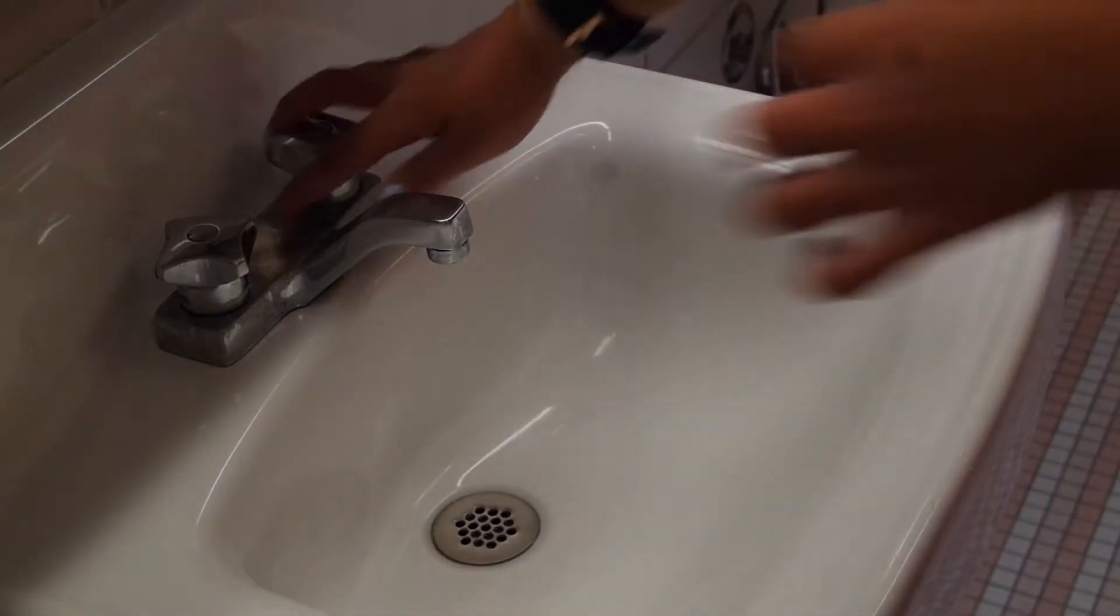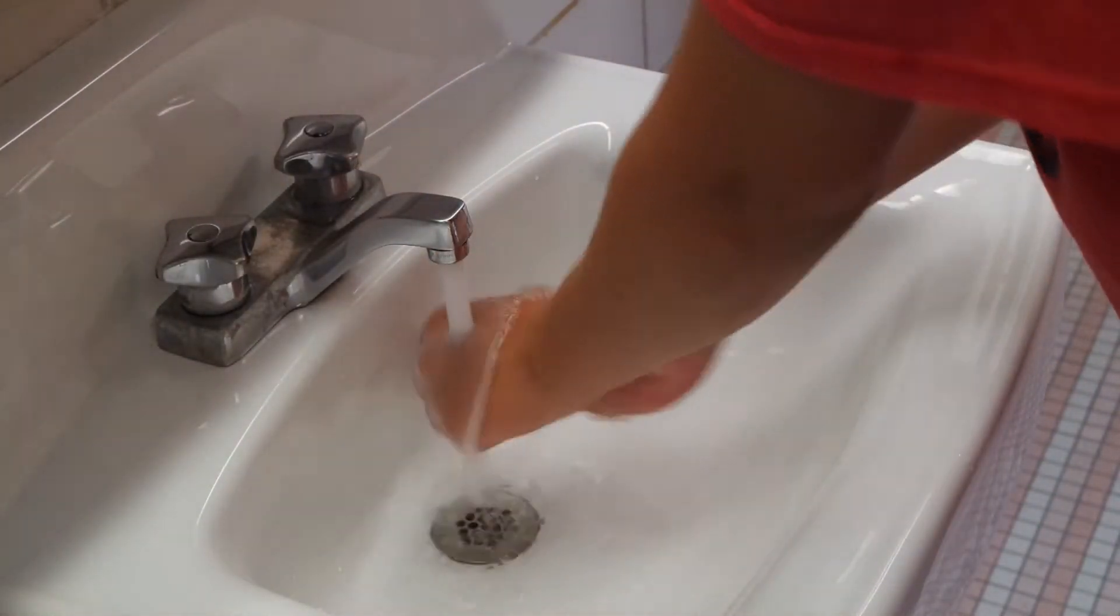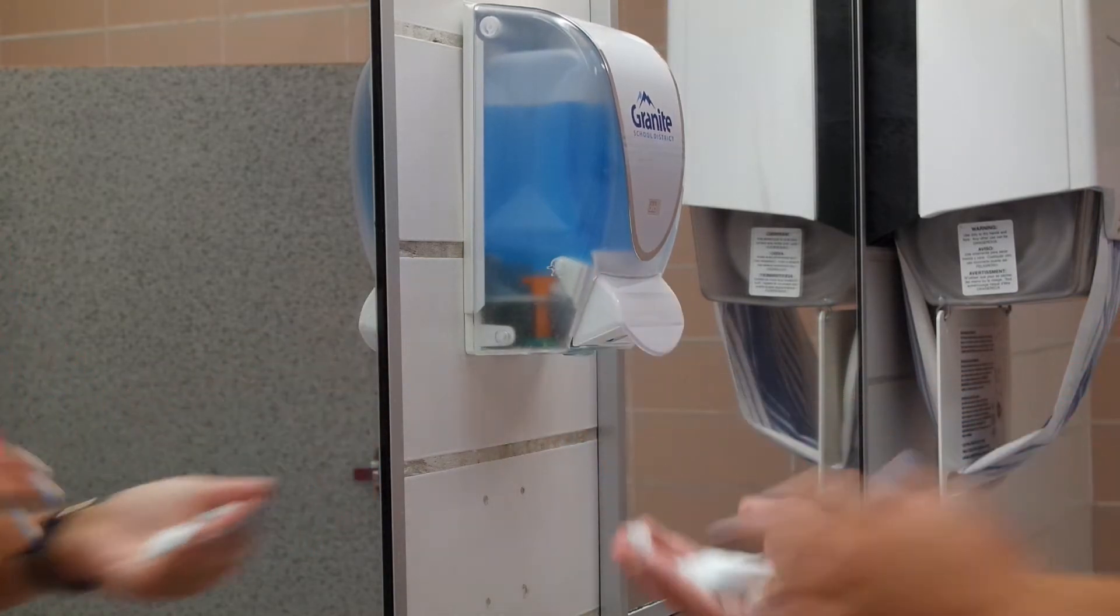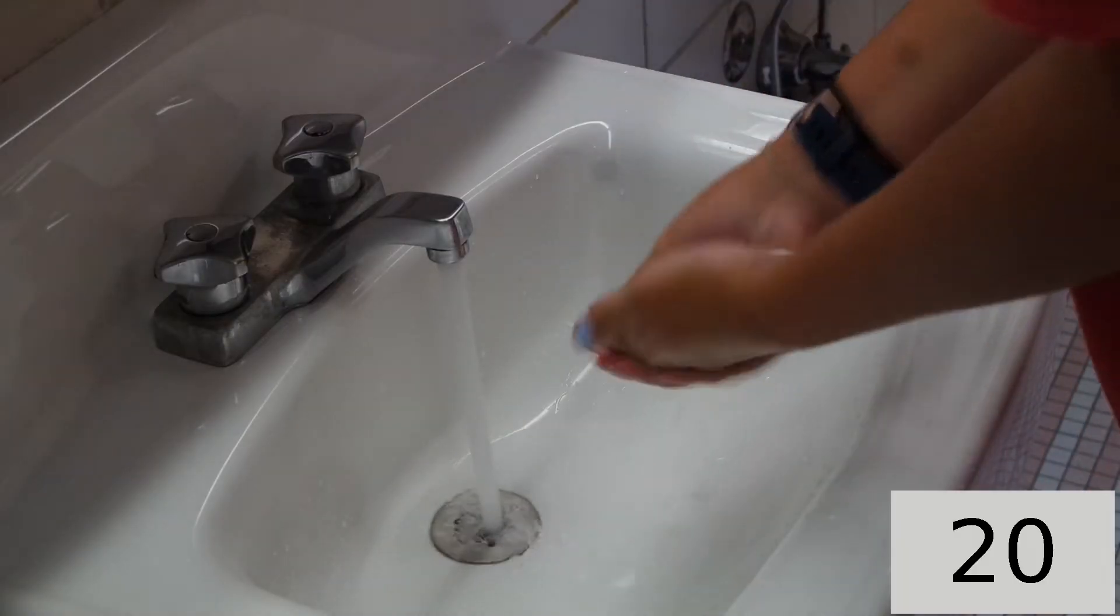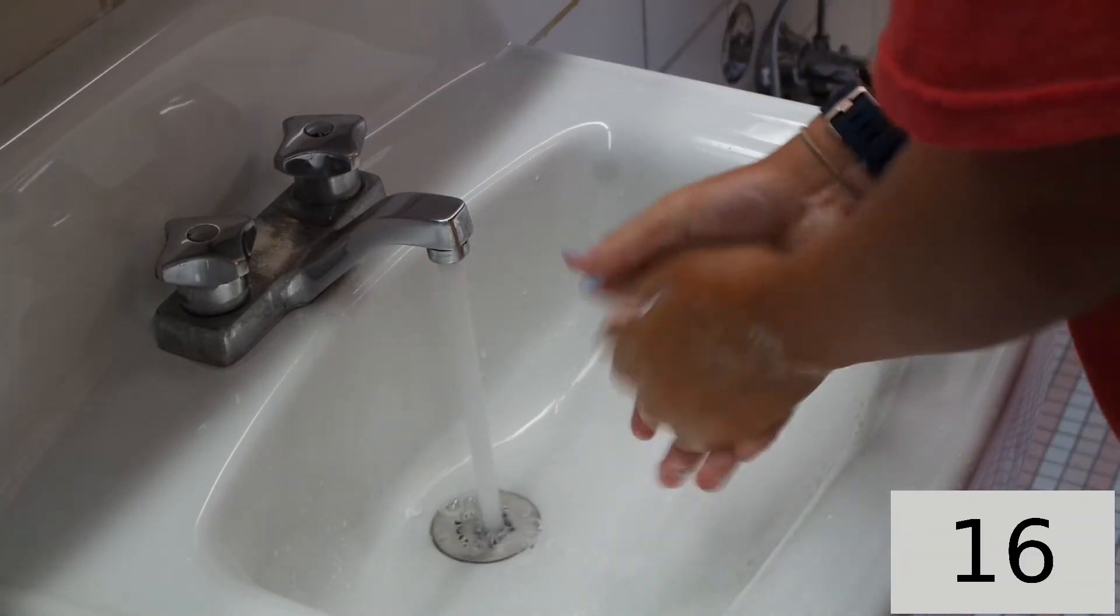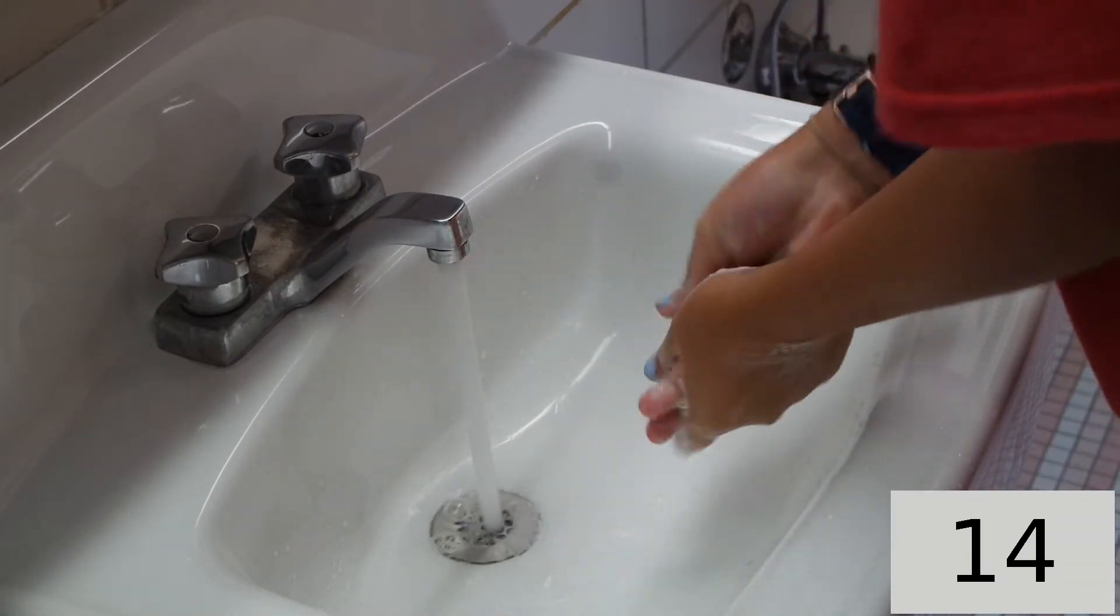Use clean running water, warm or cold, turn off the tap and apply the soap. Scrub your hands for at least 20 seconds. You need a timer - remember to sing the happy birthday song from the beginning to the end twice.